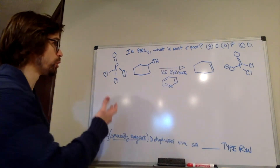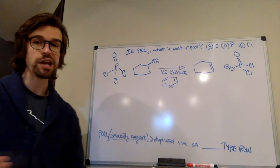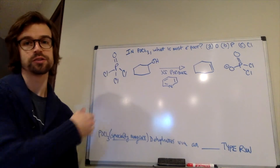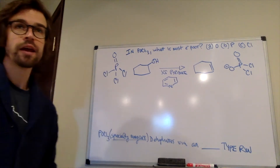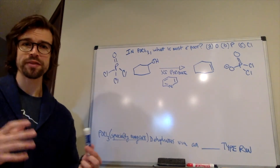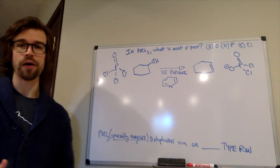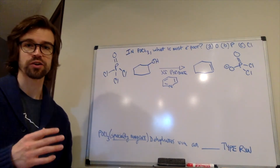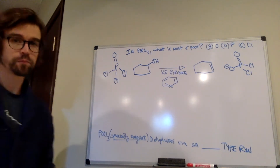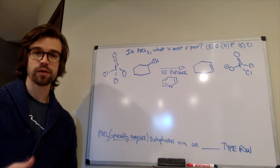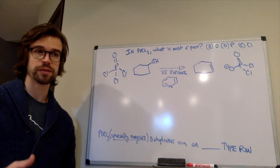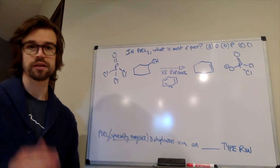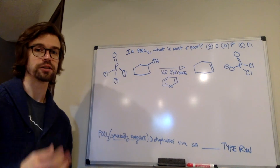The first one we're learning about today is called POCl3 — phosphorus, oxygen, and three chlorines — you can see the structure right there. It's easiest to remember what these reagents do if you really think about how they work mechanistically, with the electron movement. As I've said time and time again, organic chemistry is best learned by thinking about negatives flowing to positives, the ball rolling downhill — high energy to low energy.